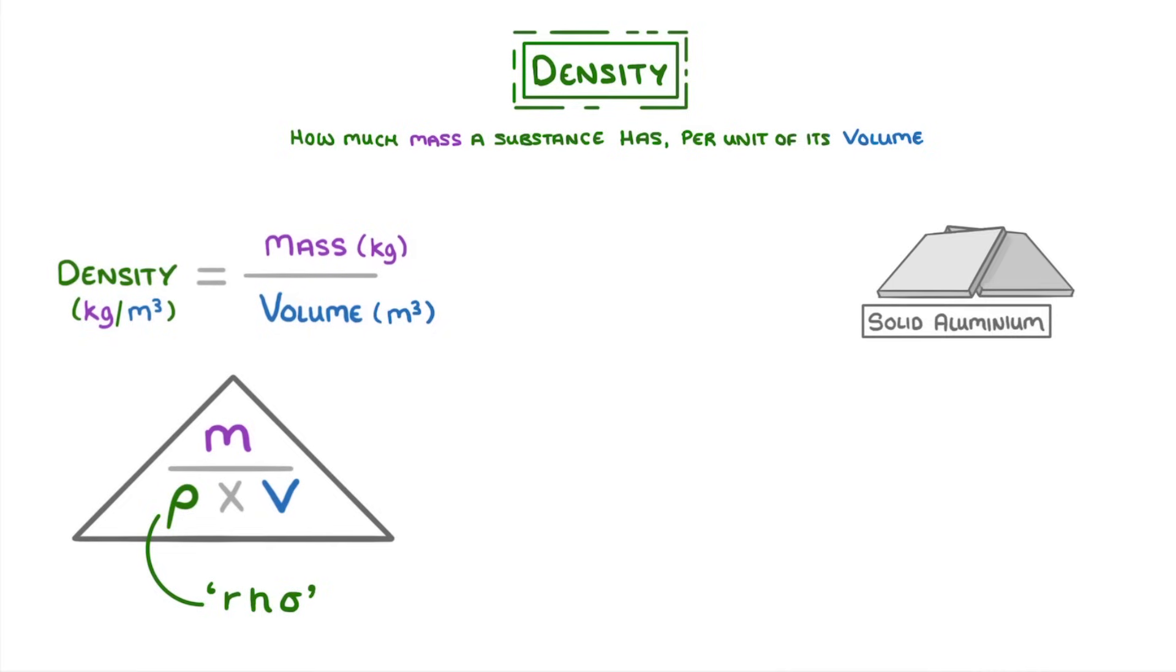So, if we take solid aluminium as an example, which has a density of 2710 kilos per meter cubed, that means that a single 1 meter cubed block of aluminium would have a mass of 2710 kilos.